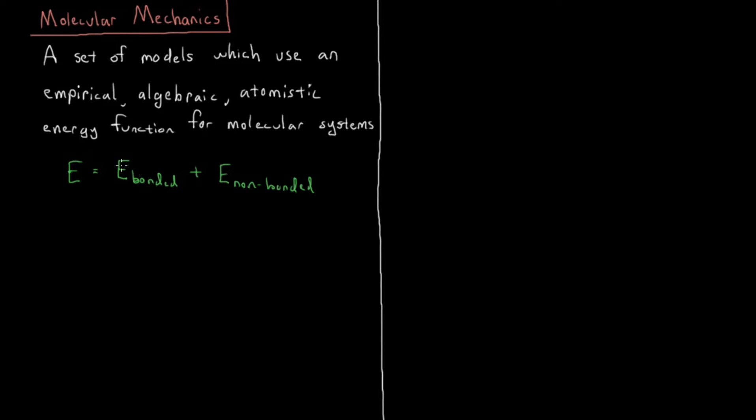The bonded energy comes from structural elements of things which are covalently bonded to each other or bonded to their neighbors. And the non-bonded energy coming from things like charge-charge interactions, London dispersion forces, anything that doesn't come from direct covalent interaction.